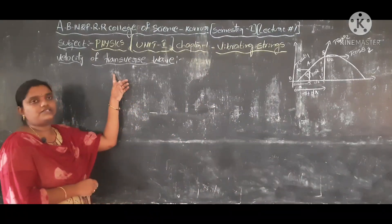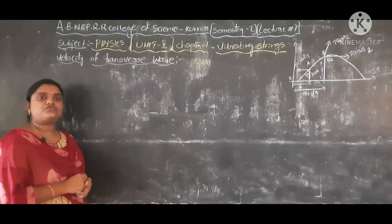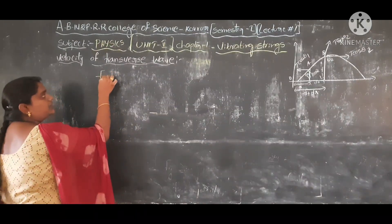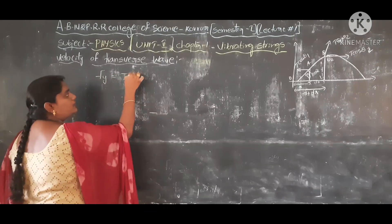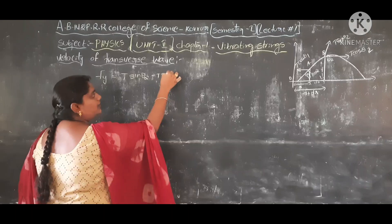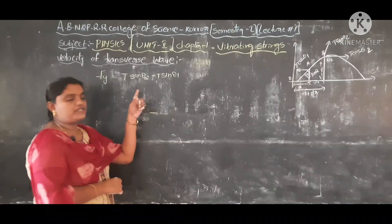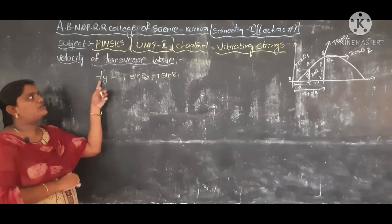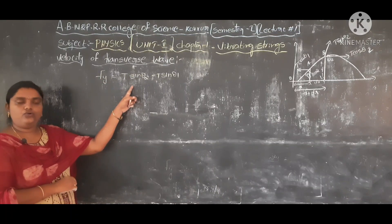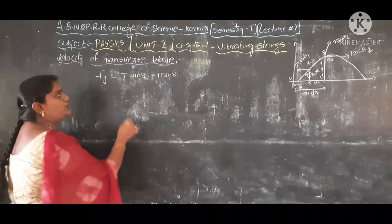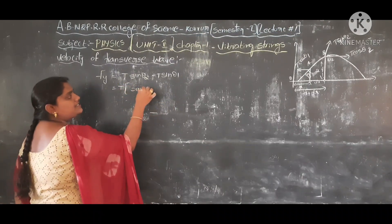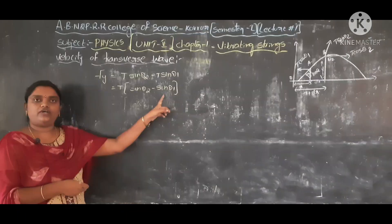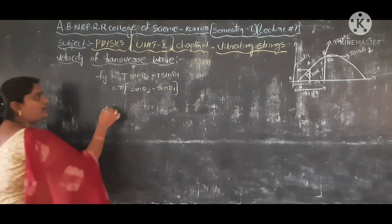We find the velocity of the transverse wave. A force is applied from x. The external force in the vertical direction: Fy = T sinθ₂ − T sinθ₁, because we are considering vertical displacement. The horizontal components are nearly equal, so the resultant force acts in the vertical direction: T sinθ₂ − T sinθ₁.